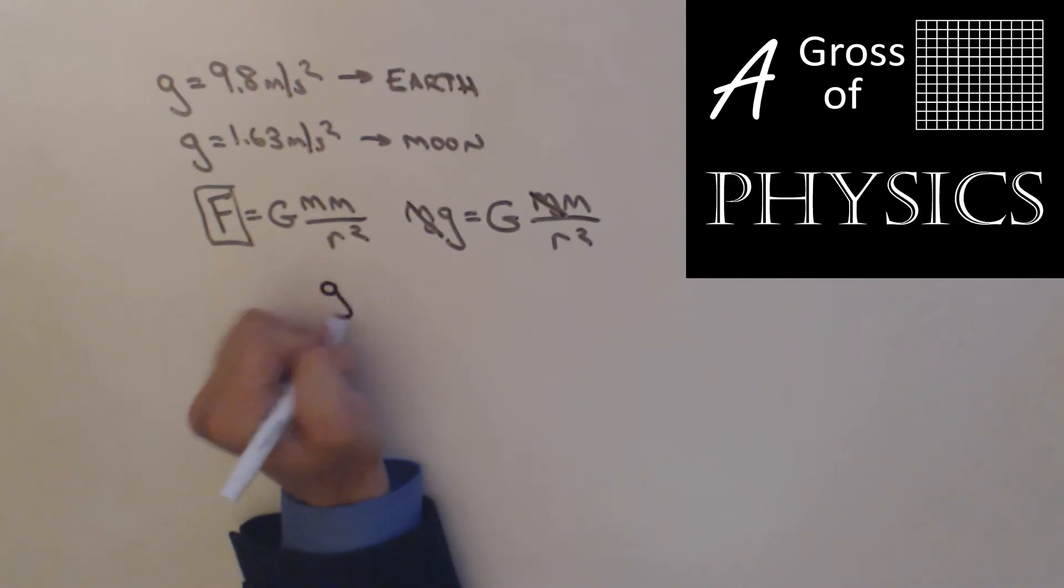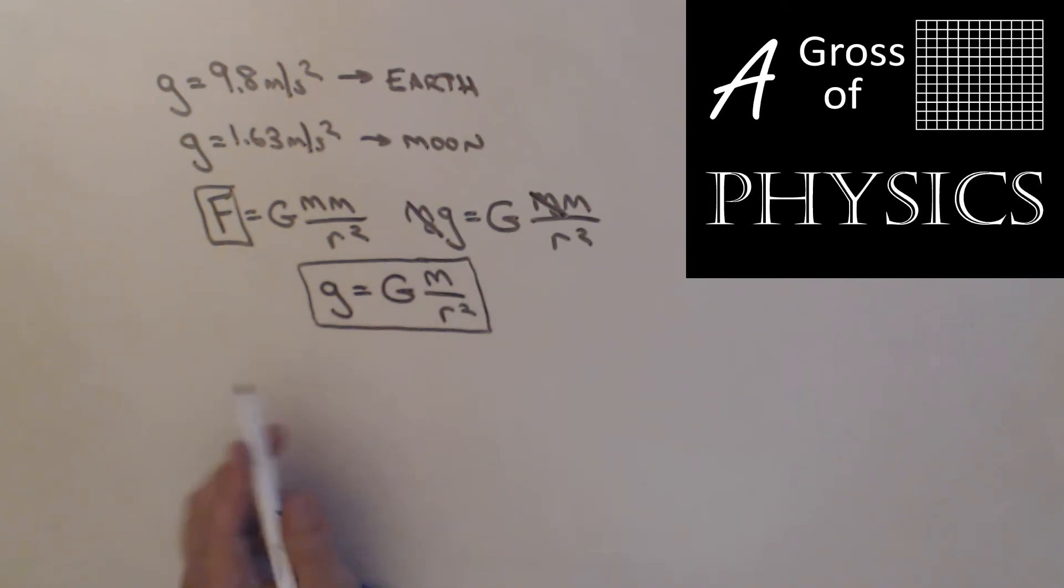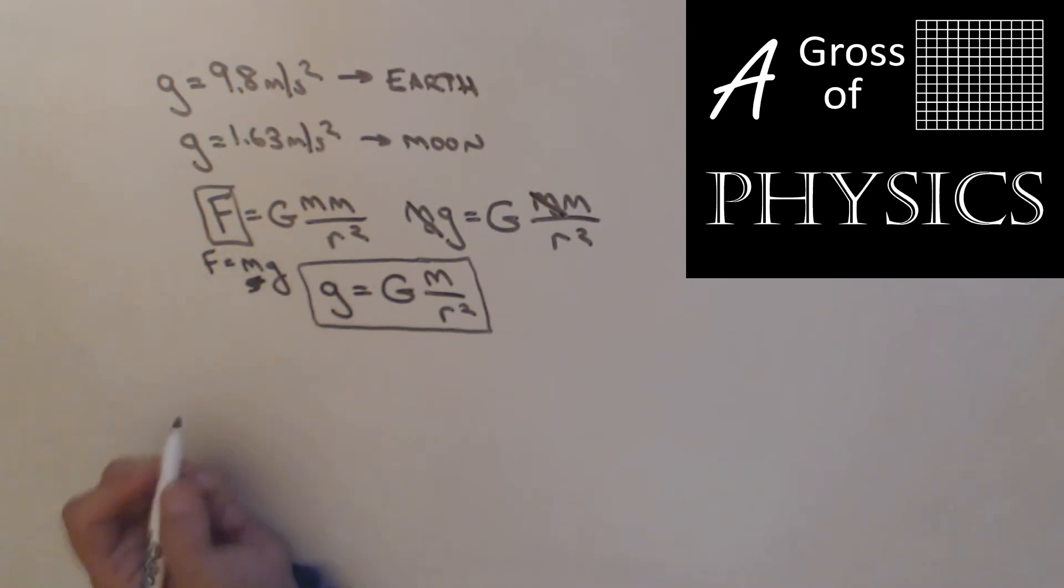So if you want to find g for any object, you would use big G m over r squared. That could get you the value for g for any planet, moon, the sun, whatever celestial body or any object in fact. It's going to be a lot easier to calculate it when we know little g by just taking the mass of the object and multiplying it by that value. So what we've really done all year is used 9.8 for this, when in fact it stems from this larger equation. Let's find g and verify the two values.